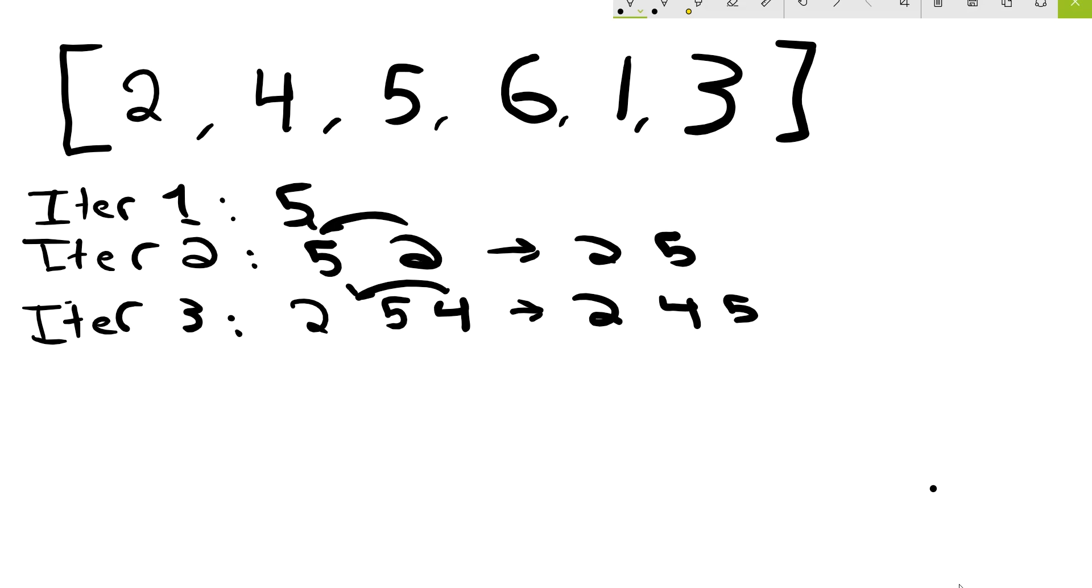So now we look at 6 on iteration 4. Well, 6 is bigger than 5 so it's in the correct spot. So 2, 4, 5, 6, nothing changes.